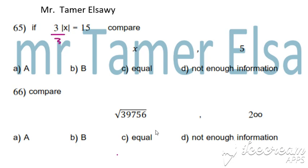Divide by 3. Divide by 3. Absolute of x equals 5. We know absolute of x can equal 5 or negative 5. So x equals 5 or negative 5.